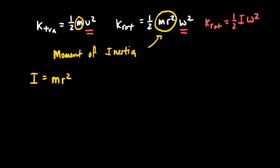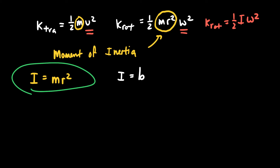For different distributions of mass, we get different equations for I. For point particles we use mr squared, but for other shapes the moment of inertia is some number b times mr squared — you don't need to memorize all these, but I equals mr squared is worth memorizing. For example, a rod of mass m and length l rotating through its center of mass has I equals one-twelfth ml squared.